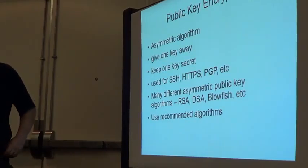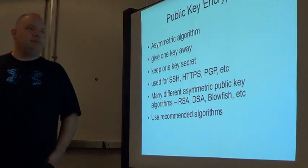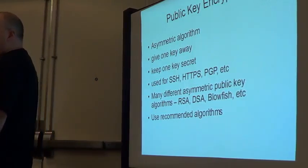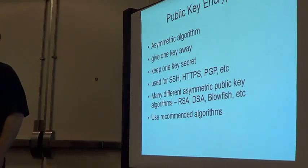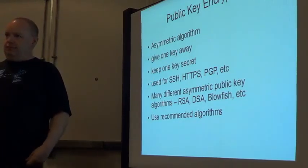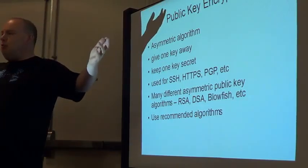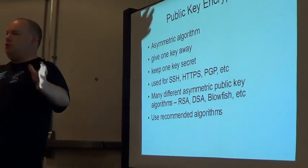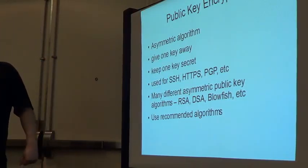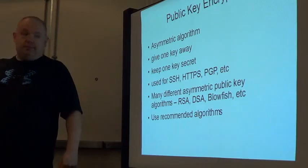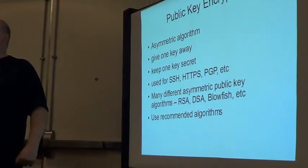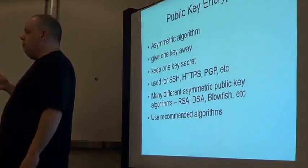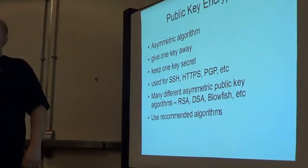Public key encryption comes down to this: you have two asymmetric keys, and you give one of them away. You make it free to the world — you paint it on a highway overpass, you put it on your web page, whatever. The other key you keep secret. This is the basis behind PGP, behind parts of SSL, and SSH.